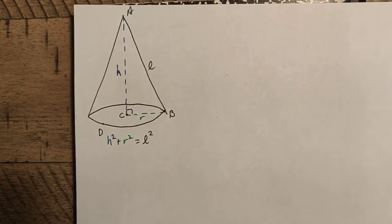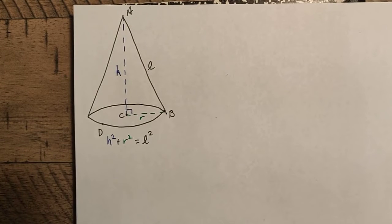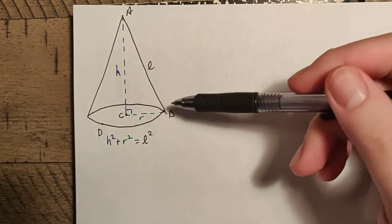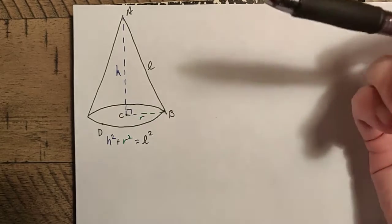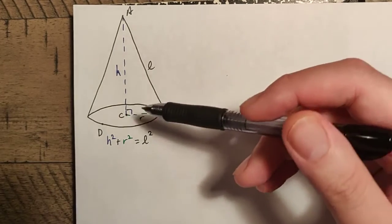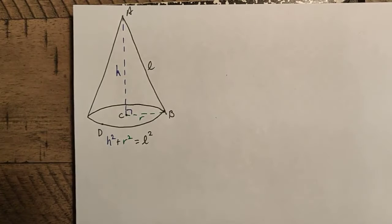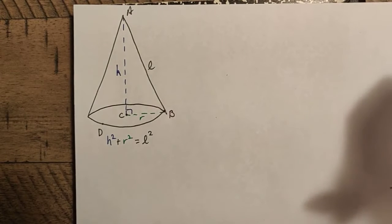Now, we'd like to determine a couple things about this, in particular the surface area. Well, the surface area, let's see, it's going to be the area of the circular base, and that's easy, that's pi R squared. But we're going to have to add the area of the lateral surface. Now, I'm not exactly sure what the lateral surface is going to look like here.